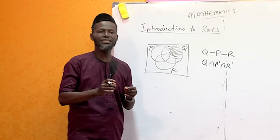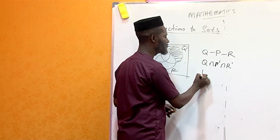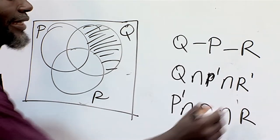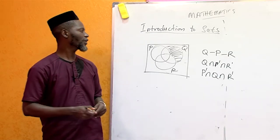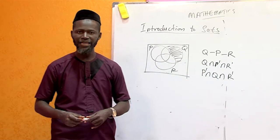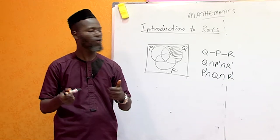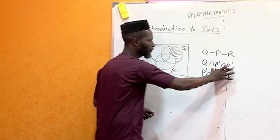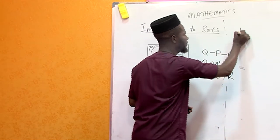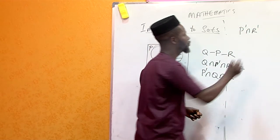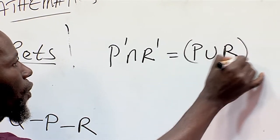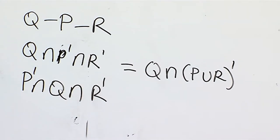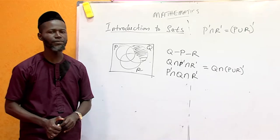If you want to write the answer in alphabetical order, we have P, Q, and R. So it becomes Q ∩ P' ∩ R'. Another way to represent the answer is to apply De Morgan's law. Combining P' ∩ R' using De Morgan's law gives (P ∪ R)'. So the answer can also be written as Q ∩ (P ∪ R)'. Either form will earn you full marks.